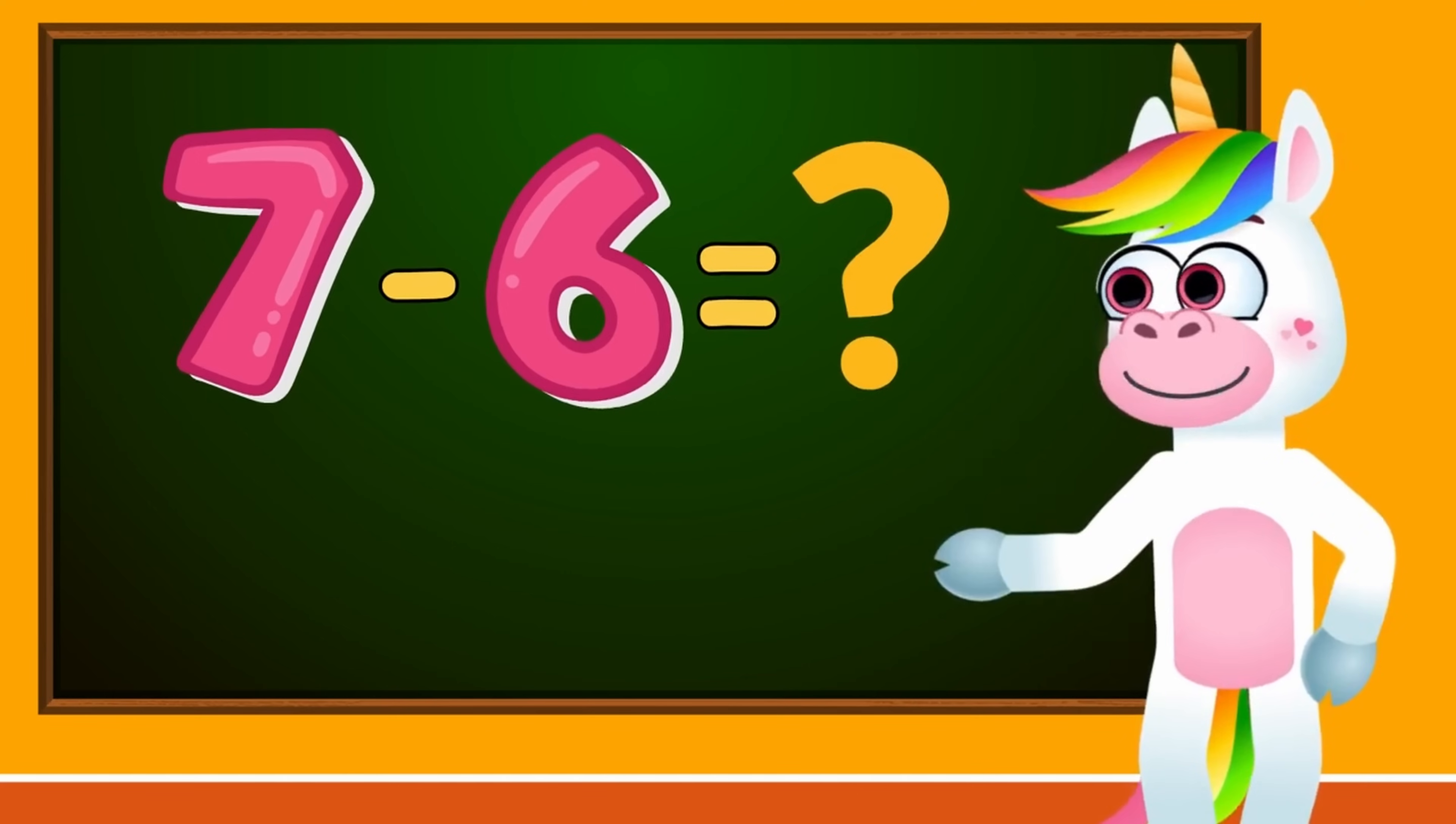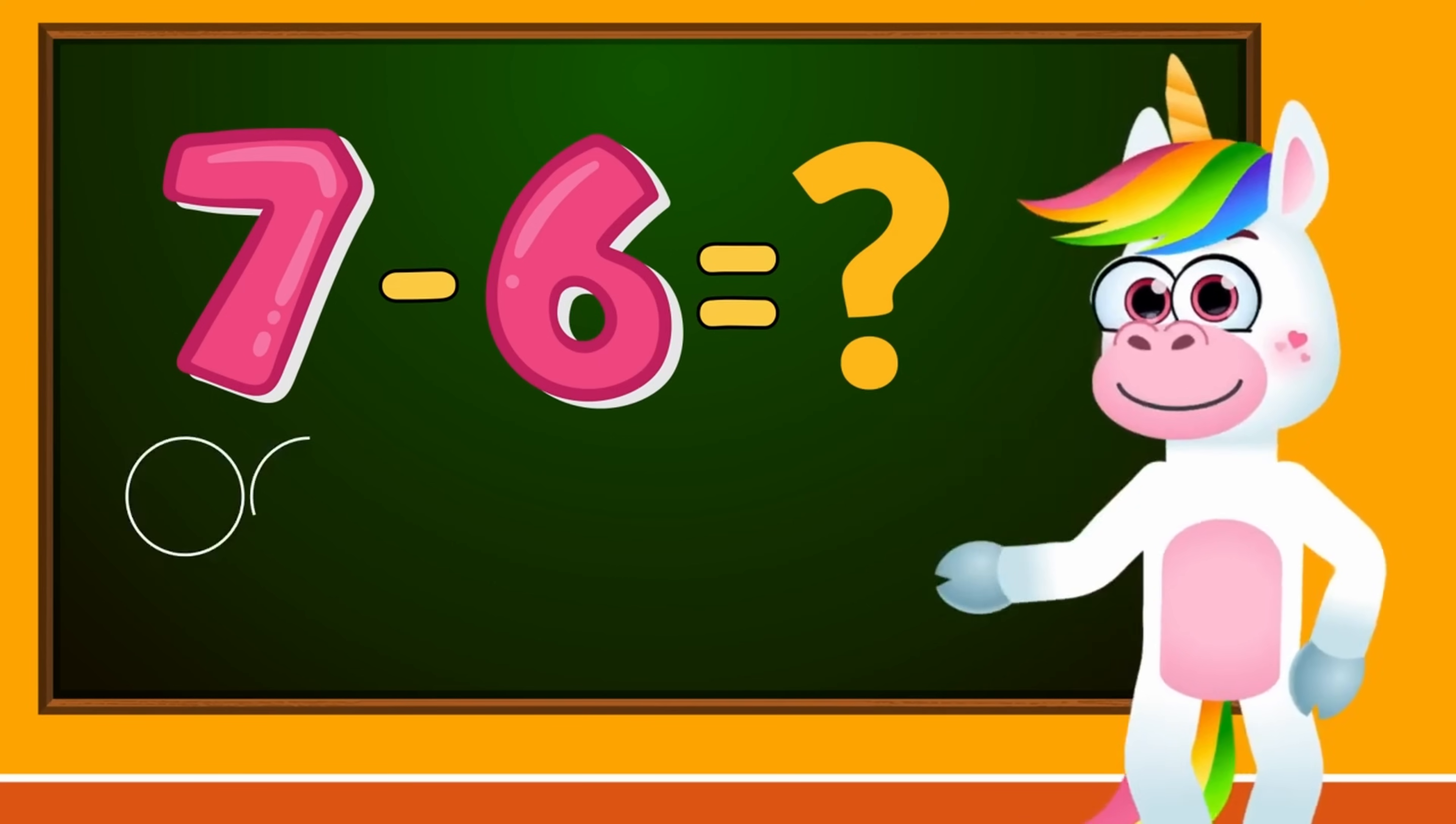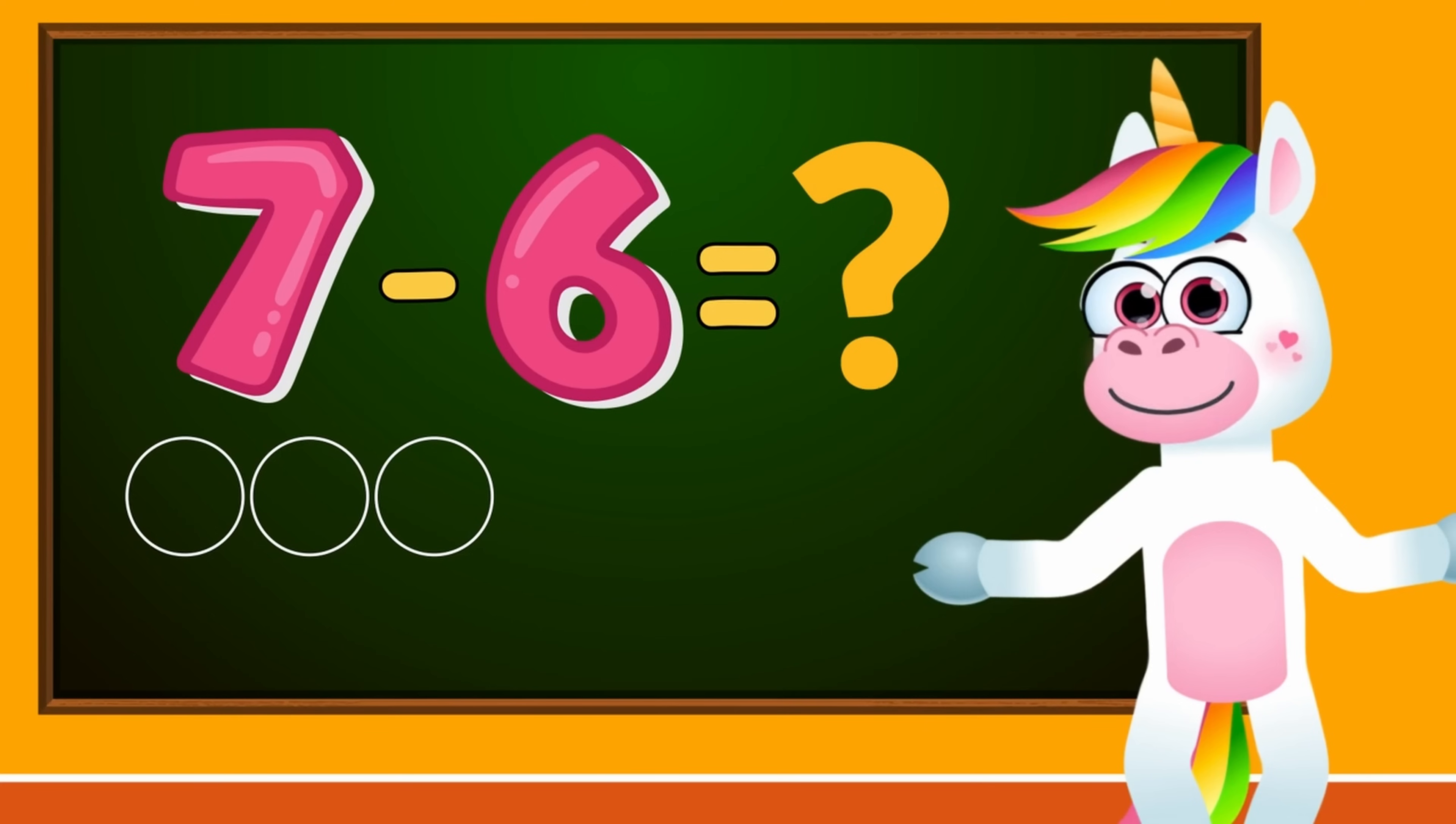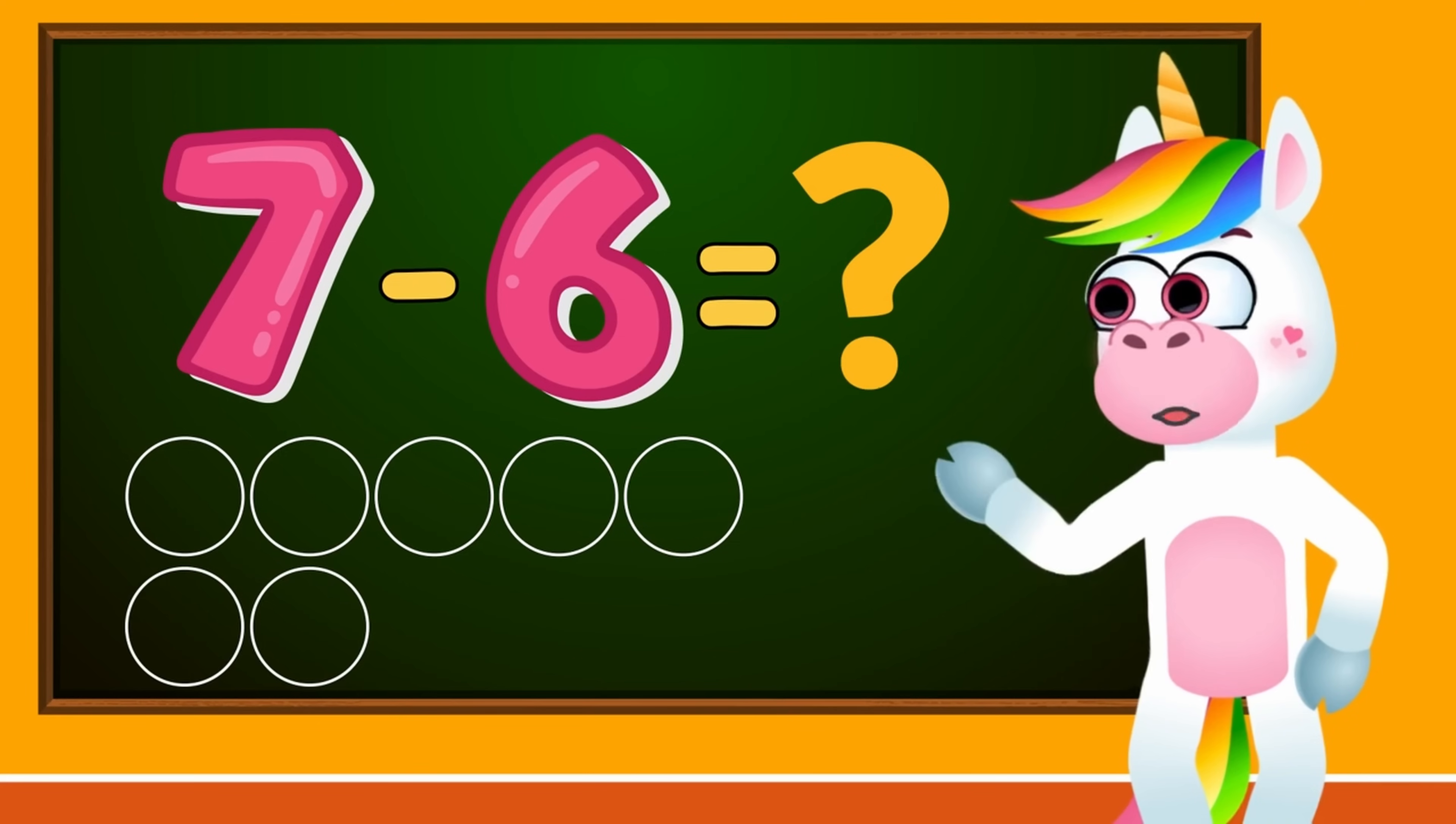What does 7 minus 6 equal? So let's draw 7 circles. 1, 2, 3, 4, 5, 6, 7. Let's cross out 6.